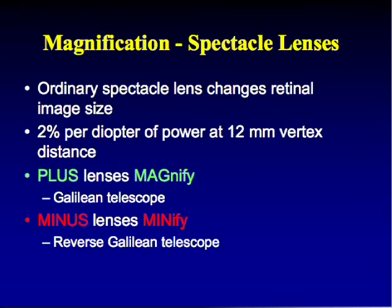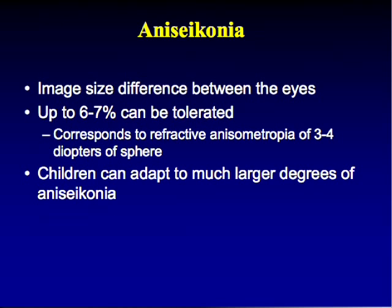Even ordinary spectacle lenses cause magnification: approximately 2% per diopter of power at standard vertex distance. This is clinically significant because it can cause anisoconia — a difference in image size between the two eyes. A typical adult can tolerate about 6 to 7 percent difference; children can adapt to larger degrees.